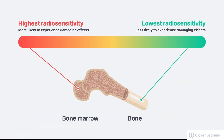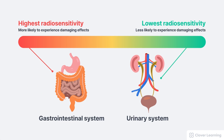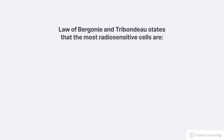Tissues in the human body have a wide range of radiosensitivity. For example, bone marrow is very radiosensitive, but bone itself, like the cortical bone, is not very radiosensitive at all. Blood cells are very sensitive to radiation, but nerve cells are not very radiosensitive. The gastrointestinal system, like the colon and stomach, is very radiosensitive, but the urinary system is not so sensitive.